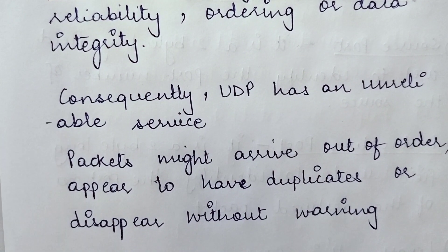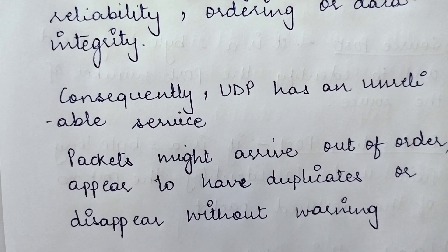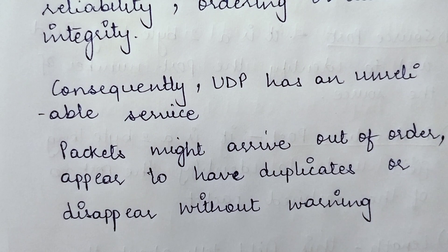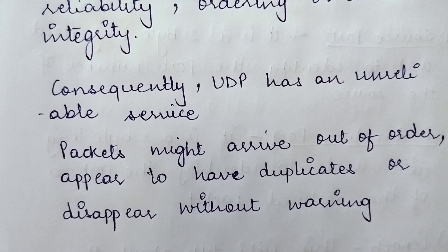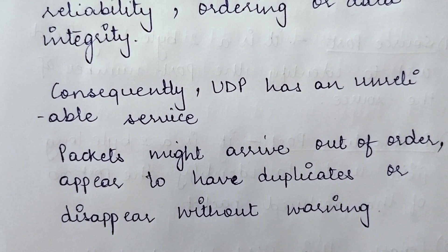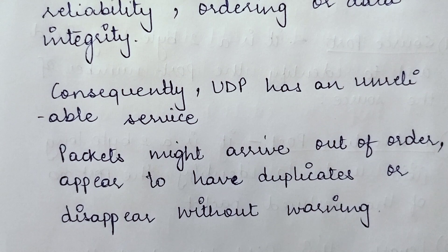Consequently, UDP has unreliable service — the services provided by UDP are not reliably guaranteed. Packets might arrive out of order, they may appear to have duplicates, or they may disappear without warning since there are no acknowledgements. For this very reason, UDP is not used in cases where you want reliability of data transmission, but it is used where you want low latency, minimum bandwidth usage, and real-time services.